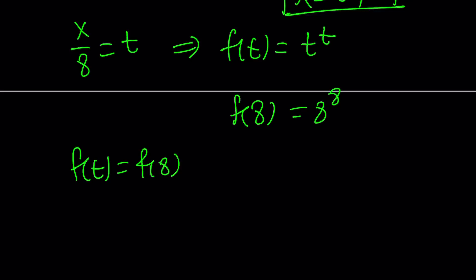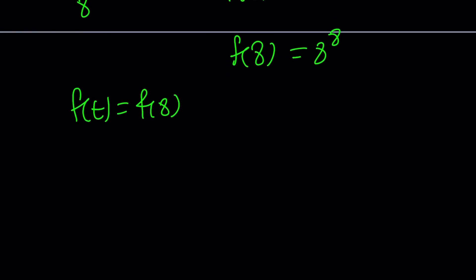But is that the only solution we're getting? For that purpose, we're going to look at the behavior of the function f of t equals t to the t. If you differentiate it, the derivative is t to the t times 1 plus ln t. Set it equal to 0.